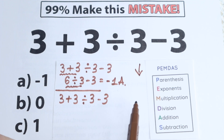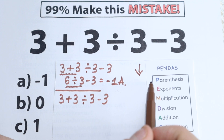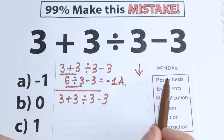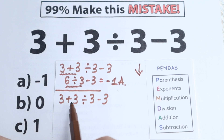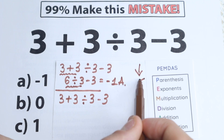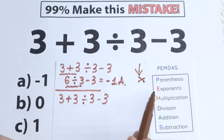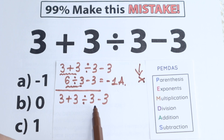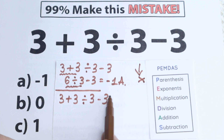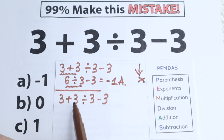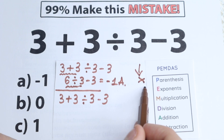PEMDAS works from the top to the bottom: Parentheses, Exponents, Multiplication, Division, Addition, and Subtraction. Let's start with Parentheses — this is always the first step. Looking at our expression, do we have any parentheses at all? I don't see any parentheses, so we just skip this part. Next step: Exponents. Are there any exponents — squares, fifth powers, tenth powers? No, we don't have any exponents, which is great, so we can skip this part too.